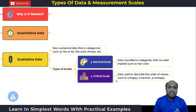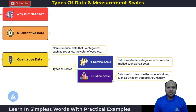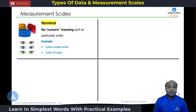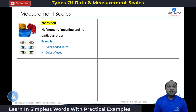These concepts are the core part of the measure phase. If you have 100% clarity on these concepts, that will help you during data collection and accurate analysis. Let's understand the measurement scales with more examples. For the nominal scale, there is no numeric meaning and no particular order. Examples include color-coded wires — red, yellow, blue — where we can group them into categories. Other examples are color of eyes and marital status: whether you are married or unmarried.